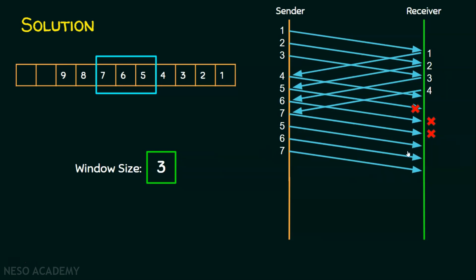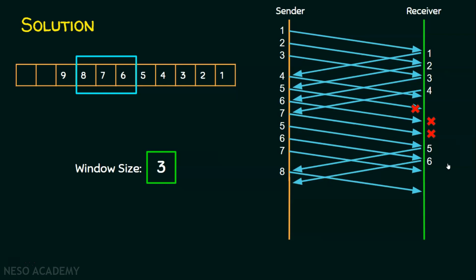Now the receiver acknowledges frame 5 — it was received successfully this time because this retransmission is not the fifth packet. After getting the acknowledgement, the sender sends the next available packet, which is packet 8, and slides the window. The current window now has packets 6, 7, and 8. The receiver acknowledges packet 6, and the sender then sends packet 9, sliding the window so it covers packets 7, 8, and 9.